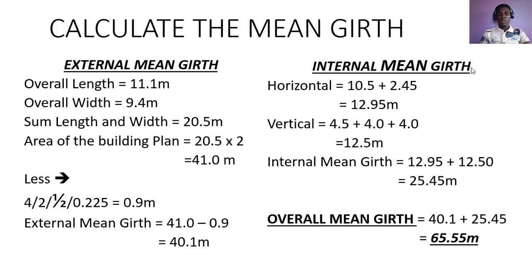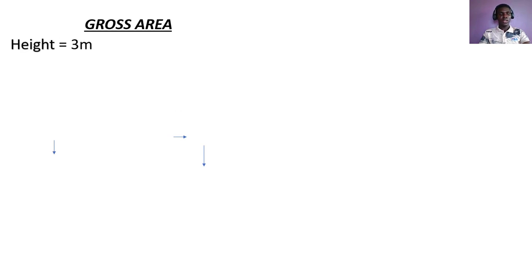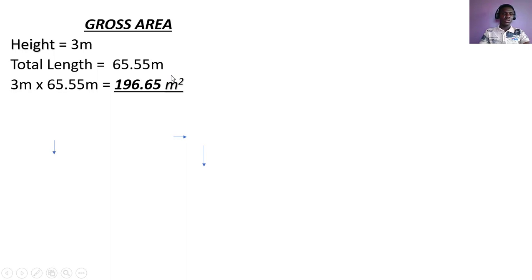Next we need to find the gross area. The reason we find the gross area is so we can deduct the openings from it. With the gross area, let's assume a height of 3 meters. Our total length is 65.55 meters. We multiply height by total length: 3 × 65.55 = 196.65 square meters. That's our gross area, and from that we'll deduct the openings to get our net area.